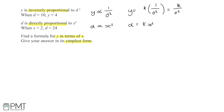Now if I'm asked to find a formula for y in terms of x, I need to link these two equations: y equals k over d squared, and d equals capital K times x squared. I can see that I have d squared in the denominator here, so if I work out both constants, I'll be able to find an equation where d squared is expressed in terms of x.